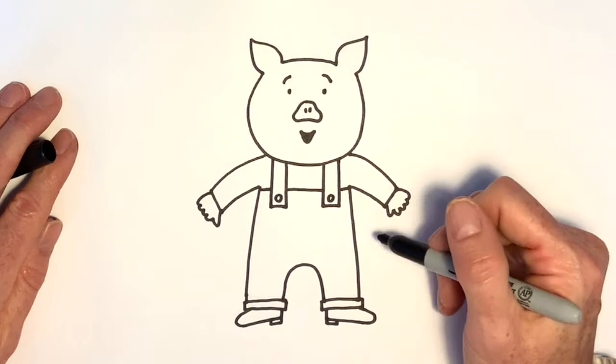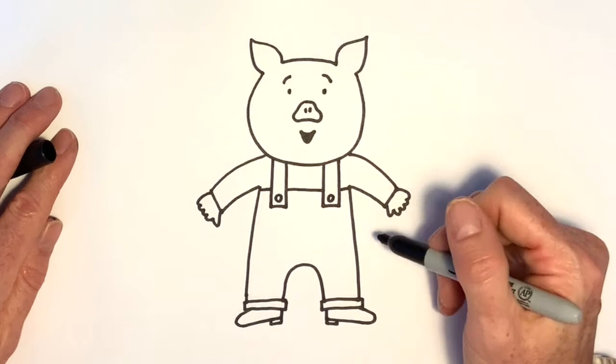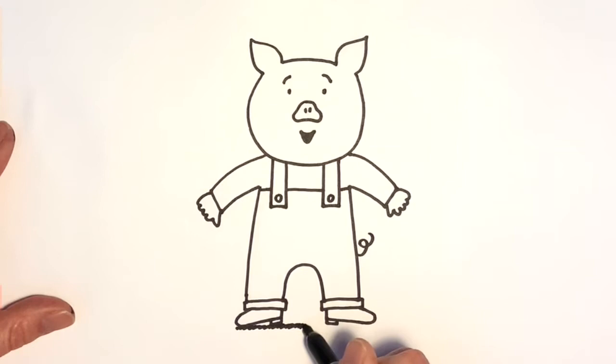And what else should I add? Oh, of course, the pig's curly tail. And then underneath the pig, I'm just going to do some shadow, so that the pig isn't floating in the sky, but looks like it's standing on the ground. There you go.